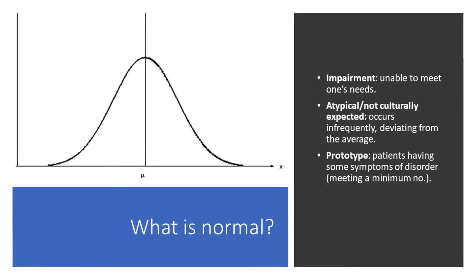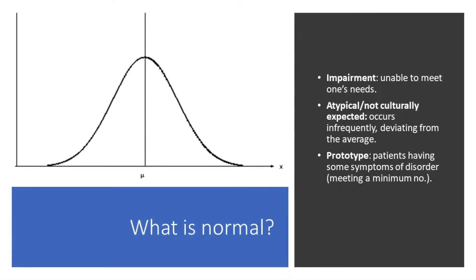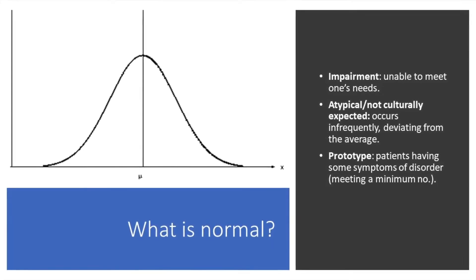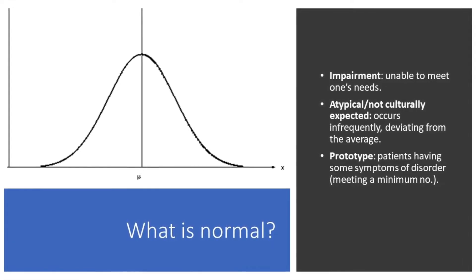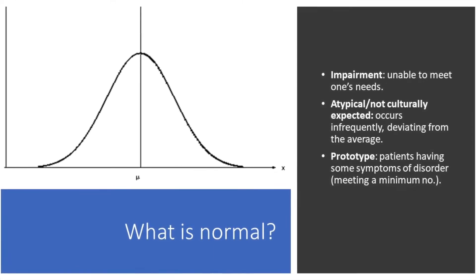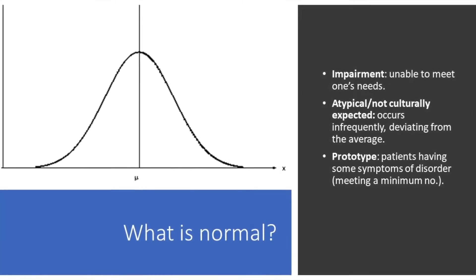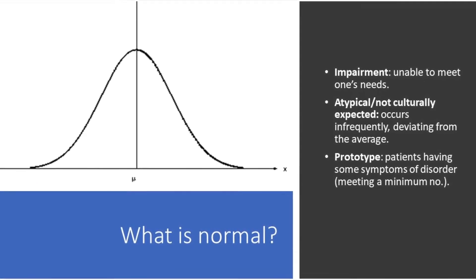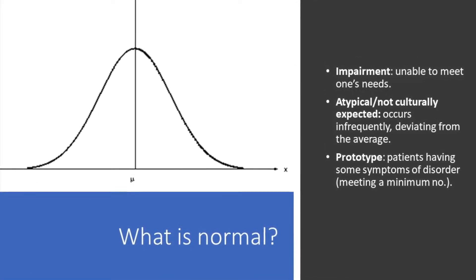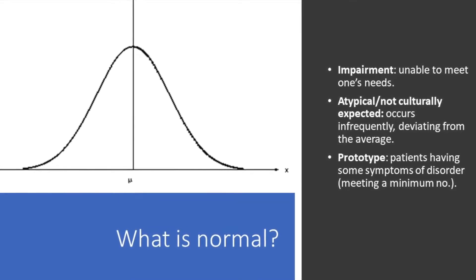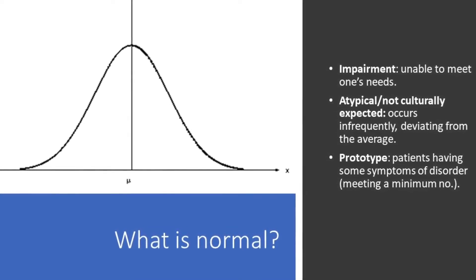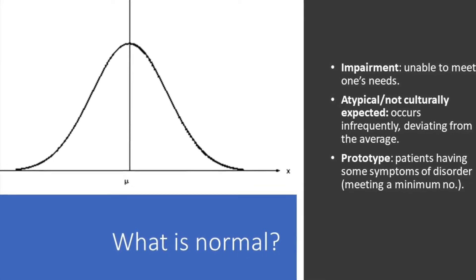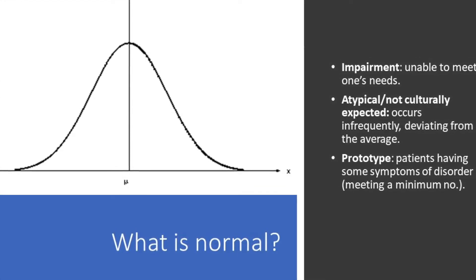Impairment is when an individual is unable to meet their needs. Atypical or not culturally expected refers to when a certain behaviour occurs infrequently and deviates from the average. Prototype patients have some symptoms of disorders, and the individual patient needs to meet a minimum number of criteria in order to be diagnosed with a certain disorder.